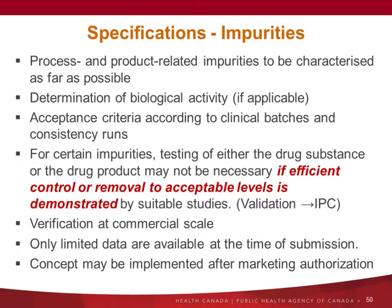The process and product-related impurities should be characterized as far as possible. You should look to determine biological activity if you can. The acceptance criteria should be set according to clinical batches and consistency runs. For host cell proteins and DNA, testing of either the drug substance or drug product may not be necessary if you have validation data showing removal during the process. Sometimes you have limited data when filing the marketing application, so you might have to do verification at commercial scale — and this may be implemented after marketing authorization.